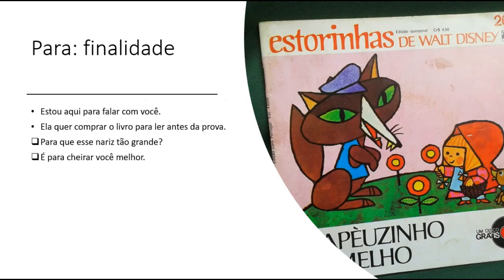The first instance of PARA is when you want to express purpose or goal of something. For example, 'estou aqui para falar com você' — I am here to speak with you. 'Ela quer comprar o livro para ler antes da prova' — she wants to buy the book to read it before the exam.